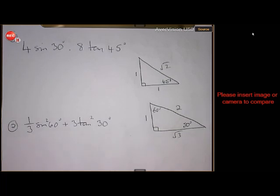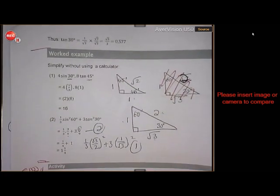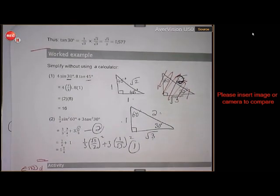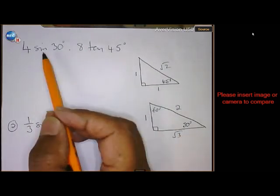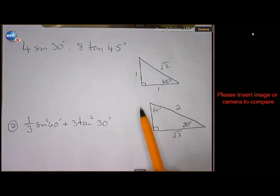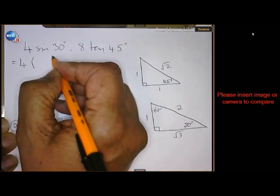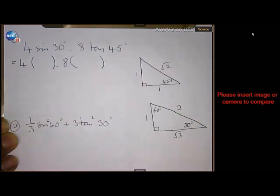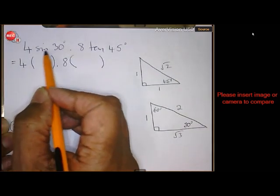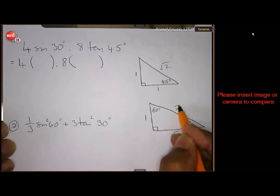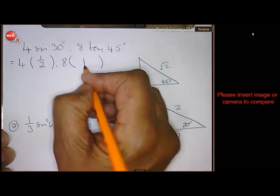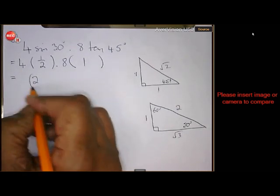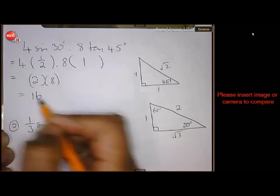We are busy with special angles and now we are going to look at a worked example. We must solve this without using a calculator, so you need to use your sketches of 45, and 30 and 60. Step 1: insert your brackets. What is the sine of 30? Opposite over hypotenuse — a half. Tan of 45? Opposite over adjacent — 1 over 1 = 1. So 4 times a half is 2, and 8 times 1 is 8, therefore the answer is 16.